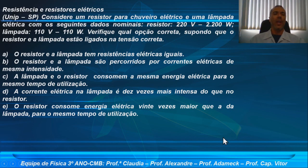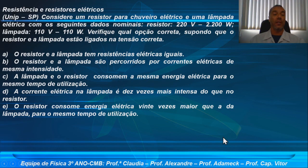Letra A: o resistor e a lâmpada têm resistências elétricas iguais. Letra B: o resistor e a lâmpada são percorridos por correntes elétricas de mesma intensidade. Letra C: a lâmpada e o resistor consomem a mesma energia elétrica para o mesmo tempo de utilização. Letra D: a corrente elétrica na lâmpada é 10 vezes mais intensa do que no resistor. Letra E: o resistor consome energia elétrica 20 vezes maior que a da lâmpada para o mesmo tempo de utilização. Vamos analisar item por item.